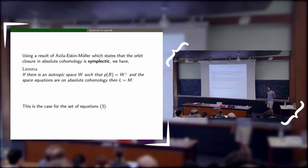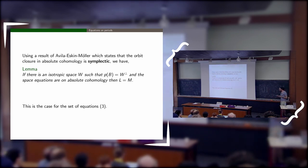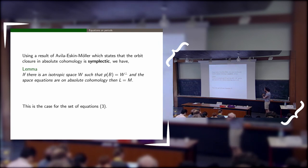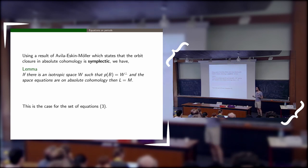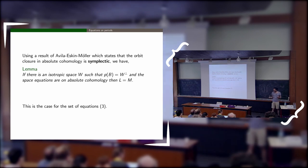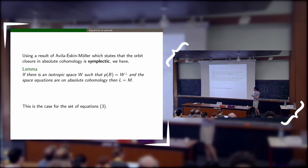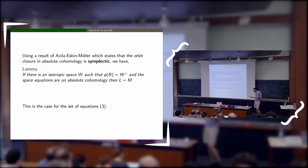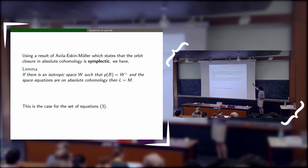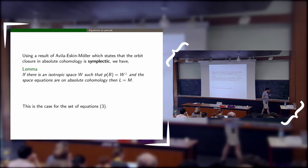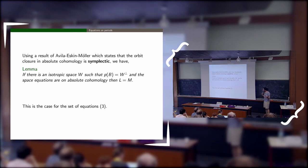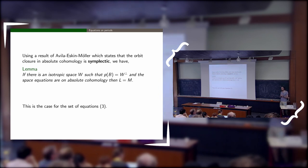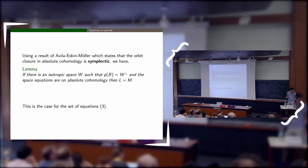We are now reduced to equations in absolute cohomology. For this part we use a result of Avila-Eskin-Möller, which states that in absolute cohomology orbit closures are symplectic. So anytime you have non-symplectic behavior — if the intersection form in absolute cohomology is zero on the restriction of your orbit closure — you need at least one more vector. If the orbit closure is an isotropic space of good dimension, it cannot be constrained by these equations. This removes the last set of equations.